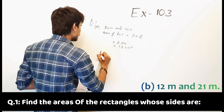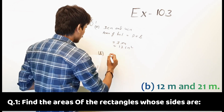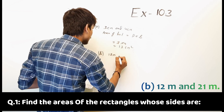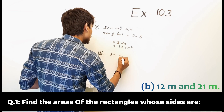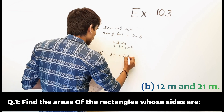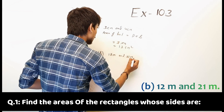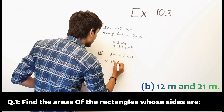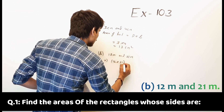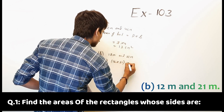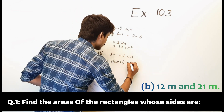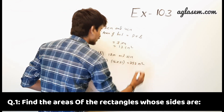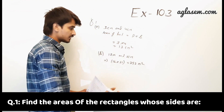Part B: sides are 12 meter and 21 meter. So 12 multiplied by 21 is equal to 252 meter square. So this is the answer.